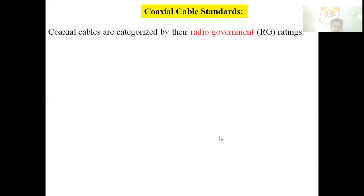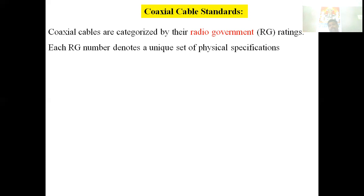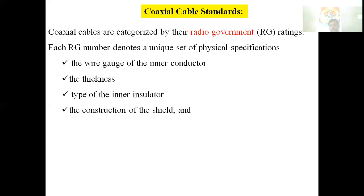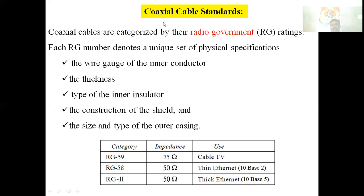Coaxial cables are categorized by their radio government (RG) ratings, where each RG number denotes a unique set of physical specifications including wire gauge, insulator type, shield construction, and outer casing. RG-59 has an impedance of 75 ohms and is used for cable TV. RG-58 has an impedance of 50 ohms and is used in thin Ethernet (10Base2).